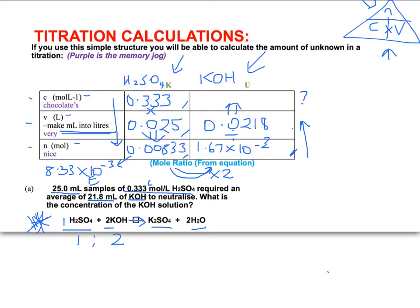So we put that into our calculator, 1.67 times 10 to the minus 2, and we divide it by 0.0218, and we get our concentration of 0.764. And that'll be in moles per liter, as it says in the diagram. So that's an example of how to use this grid.